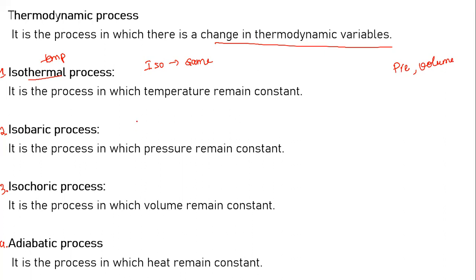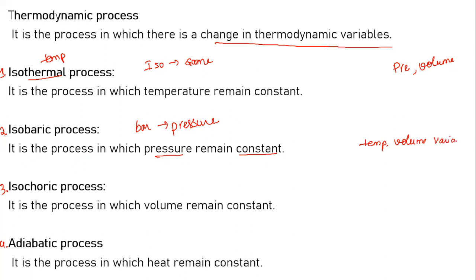'Baric' resembles pressure. So if in a process the pressure remains constant, that process is called an isobaric process. Pressure remains constant, while temperature and volume are variable.